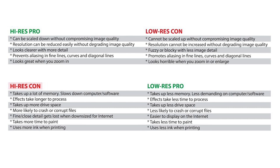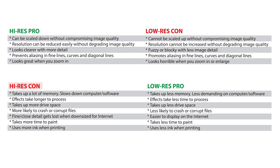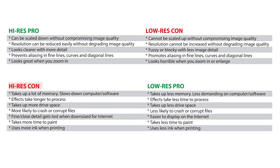The cons, however, are very important to consider. A high resolution image takes up a lot of memory, which slows down your computer and your software. It takes a lot longer to process effects, and a high resolution file takes up more space on your hard drive. Because a high resolution image is so large and memory intensive, it's also more likely to crash or become corrupted. The fine up-close detail of a high resolution image gets lost at a distance while zoomed out or when the image is downscaled. It also takes a lot more time to paint, and it requires more ink when printing.